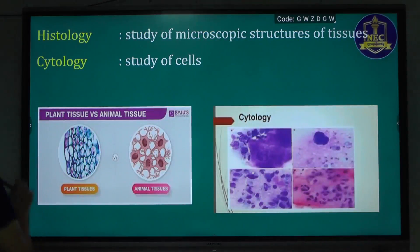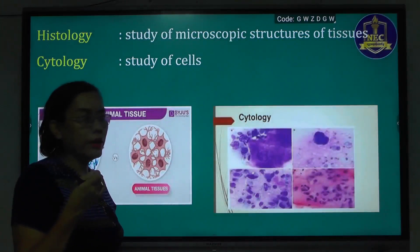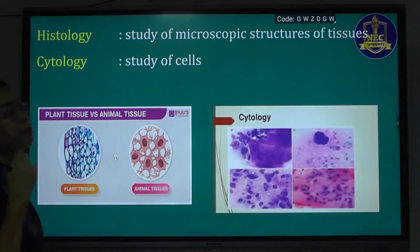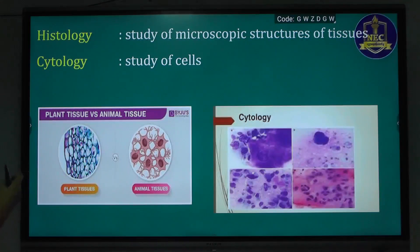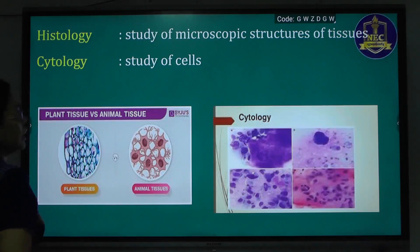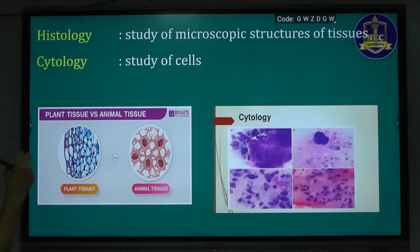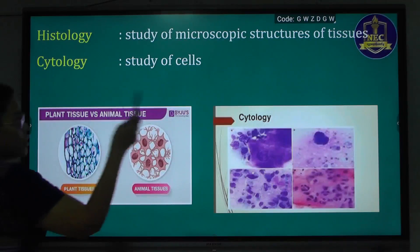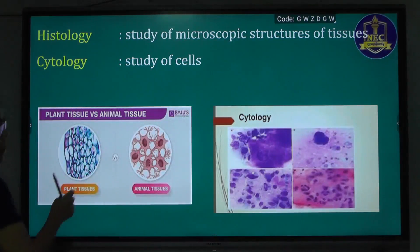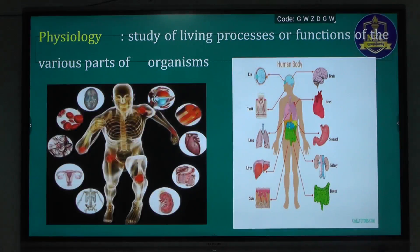Histology is the study of the tissues of organisms. Cytology is another branch closely related to histology, dealing with the study of cells.